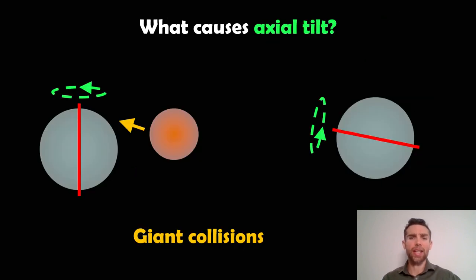So what actually causes the axial tilt? One of them that we're probably quite familiar with because it relates to Earth is giant collisions. This would be collisions between two planetary-sized objects. This one here would be Uranus. Let's say this is Uranus. It got hit by a terrestrial-sized planet and it then knocked its rotation axis off.